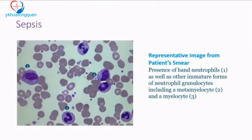The peripheral smear showed a clear left shift with myelocytes, metamyelocytes, and band forms visible. Notably, vacuoles in the cytoplasm — alongside toxic granules — are another sign of a patient progressing to sepsis. The labeled cells on the smear included band neutrophils at the bottom, a metamyelocyte, and a myelocyte. This was confirmed as a case of sepsis.